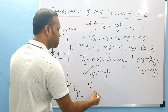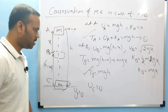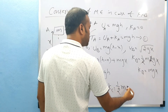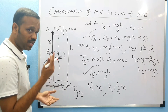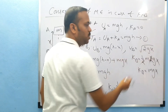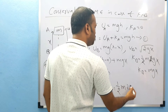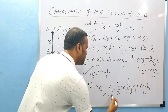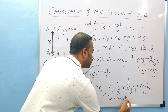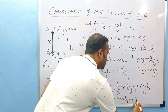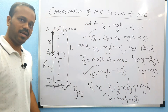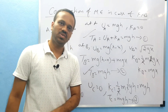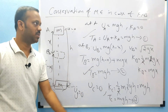At point C, which is at the ground, what is UC? Zero, since it is at the ground. What is KC? It equals half m VC squared. VC equals root of 2gh, so VC squared equals 2gh. Therefore KC equals half m times 2gh, which gives mgh. So total energy at C is mgh — equation number 3. Equations 1, 2, and 3 all equal mgh.